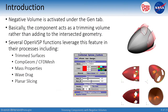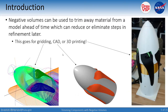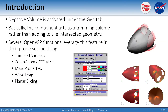Negative volume is turned on under the general tab for all components, found under the CFD mesh negative volume tab — just toggle the button on. Rather than being additive geometry where CompGeom finds the intersection and uses the outer surface, it flips things around and uses the inside surface instead, flipping all the normals, making it subtractive geometry. Several VSP functions use this, including trim surfaces, CAD export, CompGeom, CFD mesh, mass properties, wave drag, and planar slices. The transparent red cutter volumes shown here are envelopes built outside the X57 high-lift propellers for clearance.